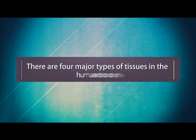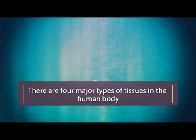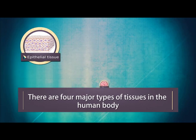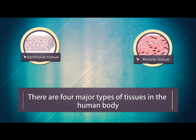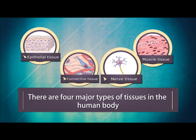There are four major types of tissues in the human body. These are epithelial tissues, muscle tissues, connective tissues and nerve tissues.